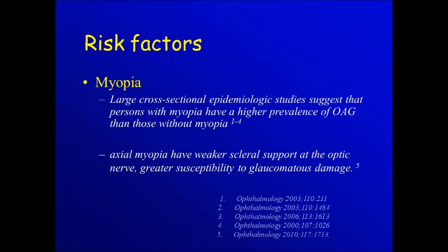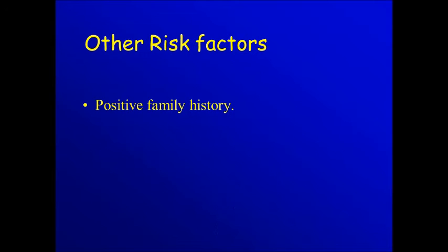It is believed that eyes with axial myopia have weaker scleral support at the optic nerve with greater susceptibility to glaucoma damage. Other risk factors include positive family history.